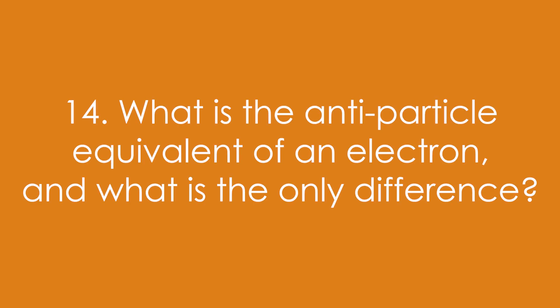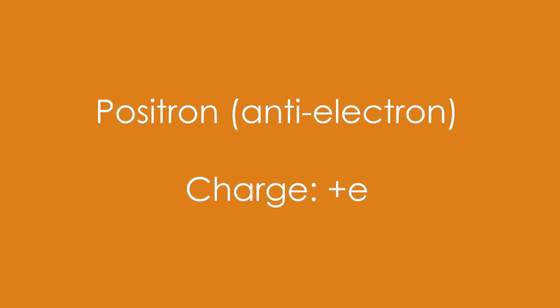14. What is the antiparticle equivalent of an electron, and what is the only difference? It's called a positron, or anti-electron, and the charge is plus E, as opposed to minus E for an electron.